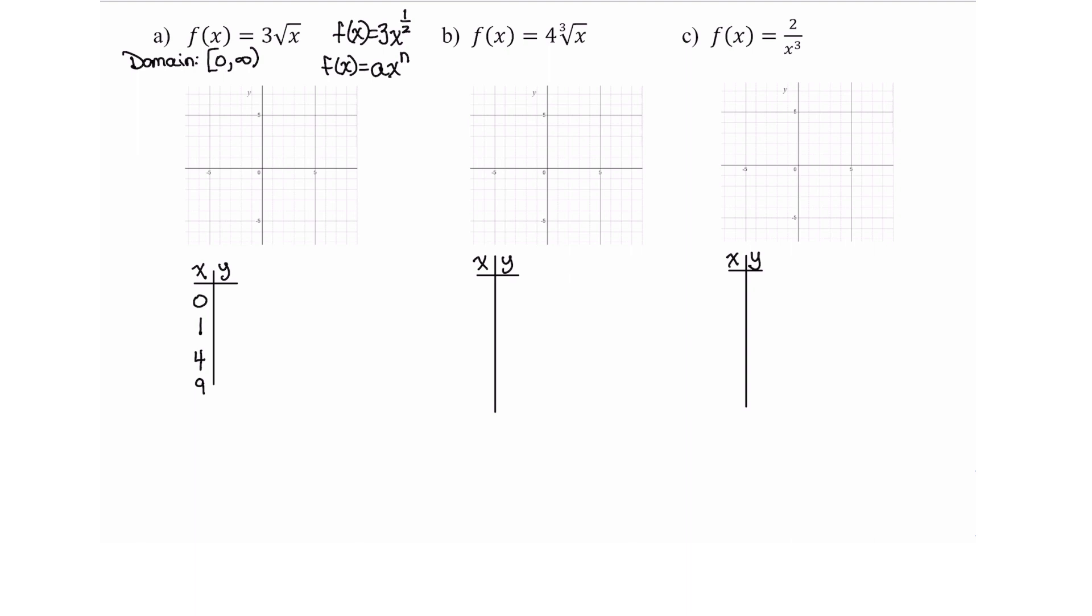When x equals 0, this would be 3 times the square root of 0. Well, square root of 0 is 0 times 3 is 0. If x is 1, that would be 3 times the square root of 1. Square root of 1 is 1, 3 times 1 is 3. If x is 4, that would be 3 times the square root of 4. Square root of 4 is 2, 3 times 2 is 6. Finally, if x equals 9, I have 3 times the square root of 9. Square root of 9 is 3, 3 times 3 is 9.